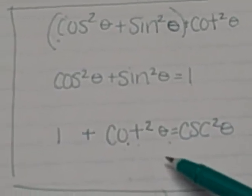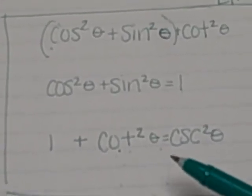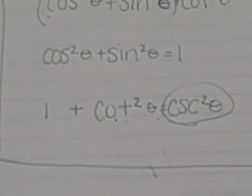If you look in the book for that, it says that one plus cotangent squared equals cosecant squared. So cosecant squared theta is your answer.